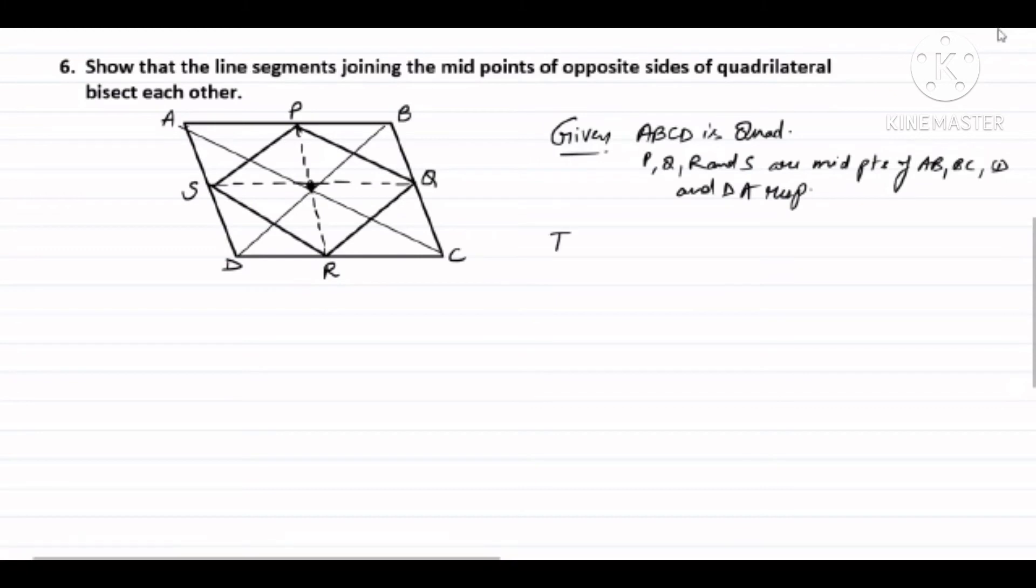What do I need to prove? Line segments joining the midpoints of opposite sides of the quadrilateral bisect each other. That is, PR and QS bisect each other. This is what I need to prove. Now if you see, PR and QS are the diagonals of quadrilateral PQRS. If I prove that PQRS is a parallelogram, then by the property of a parallelogram, its diagonals bisect each other. That is, for this I need to prove PQRS is a parallelogram.